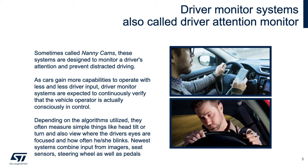DMS — also called driver attention monitor — has a number of different names. It's essentially what is derisively called a nanny cam. These are systems within the car to see what the driver is doing. Generally, you have some kind of a sensor that looks at the driver's face and head, so it can tell whatever computer you have in the center stack or in the car that the driver is attentive or not attentive. The idea is to remove any capability or possibility that the driver is not looking at the road.